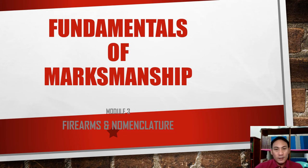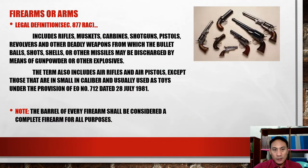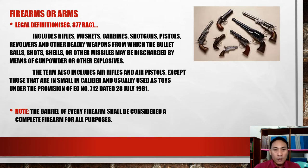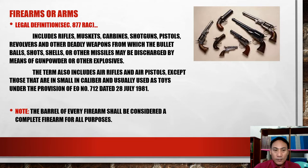Our topic for today is firearms and domain. First, we will define what a firearm is. Based on the legal definition, it includes muskets, carbines, shotguns, pistols, revolvers, and other deadly weapons from which bullets, balls, shots, shells, or other missiles may be discharged by means of gunpowder or other explosive. The term also includes air rifles and air pistols, except those that are small in caliber and usually used as toys, under the provision of EO Number 712 dated July 28, 1981.